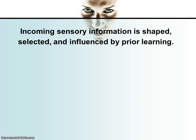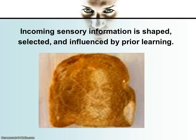The dragon illusion is a very powerful way of showing how our incoming sensory information is shaped, selected, and influenced by our prior learning. The brain has a really strong knack for seeing faces everywhere. For example, let's look at this bit of toast — what do you see? Some people say they see the Virgin Mary. Personally, I see Michael Jackson. Maybe it's just a bit of toast.